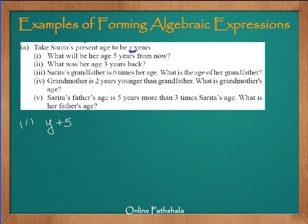The second question asks: what was her age 3 years back? We know her current age is y. If I want to know her age 3 years back, I simply subtract 3 from it. So her age 3 years back is y minus 3.